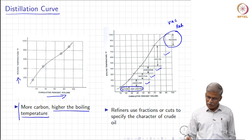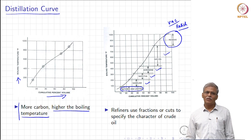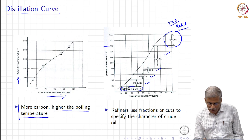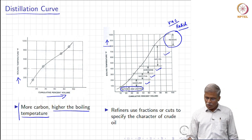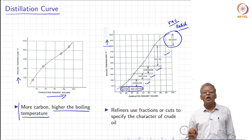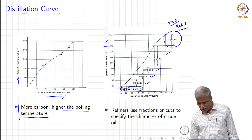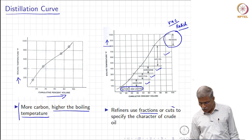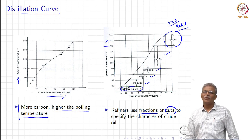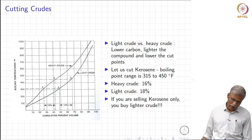The refinery terminology for this residue is 'vac resid.' Around 800°F and above, you get this vacuum residue. Refiners use these fractions — most importantly using terminology called 'cut' — to tell you something about the character of the crude oil.